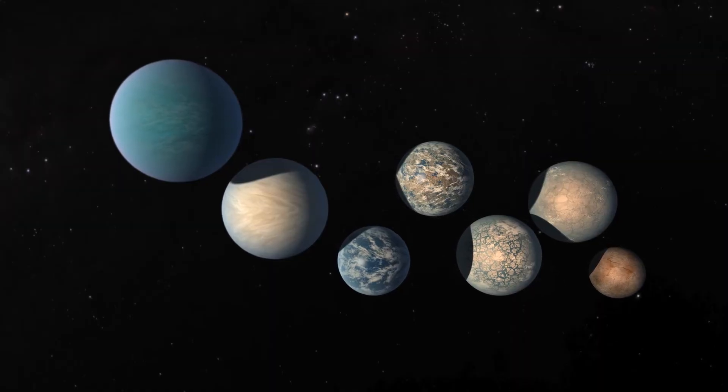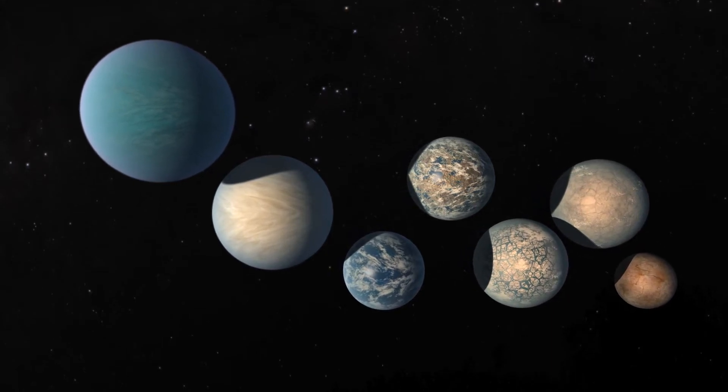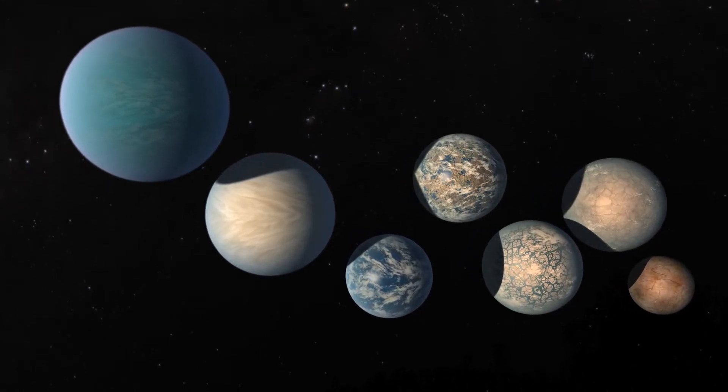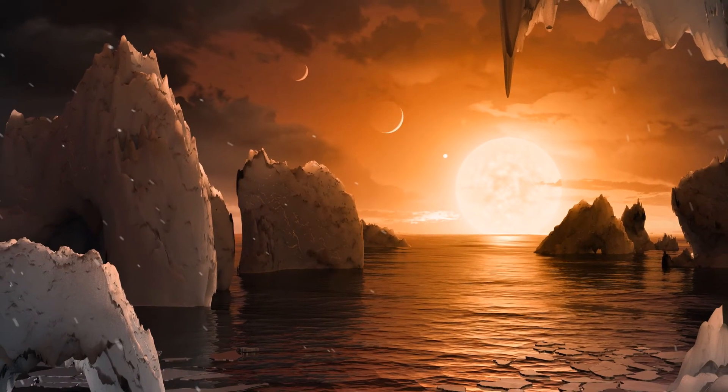It turns out that the TRAPPIST-1 system is ideal for this kind of measurement. The planets are so close together that they have particularly strong gravitational effects on each other that create noticeable variations on the order of a few minutes.